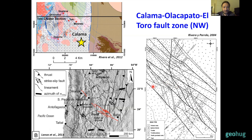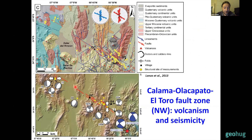Work done on the Argentine side of the Andes along the same Calama or Lagarto-El Toro fault system now provides extensive field data showing this is really a major fault system with predominantly strike-slip kinematics during the Miocene. They also show it is related to upper crustal seismicity in this area — so this is also a fault still being reactivated and producing seismicity today.